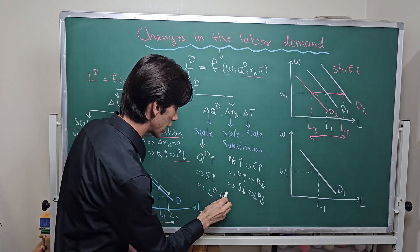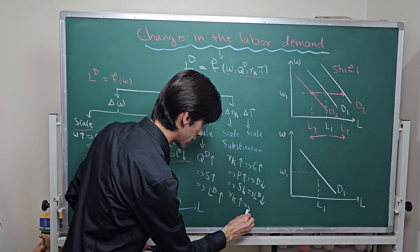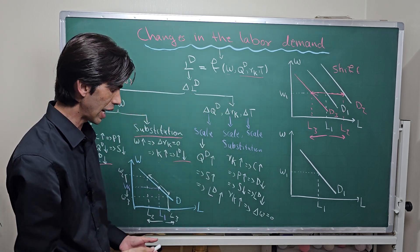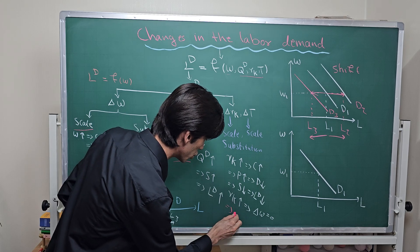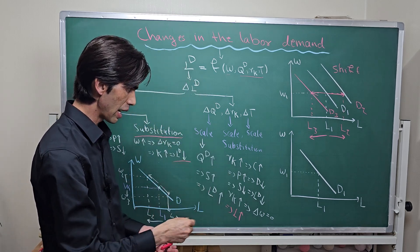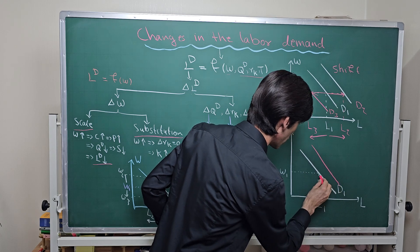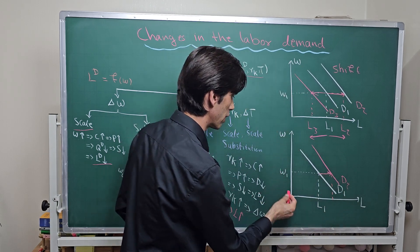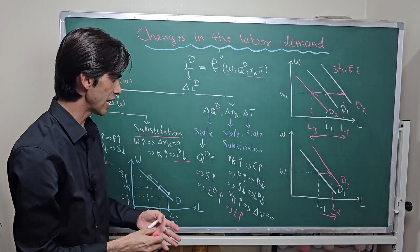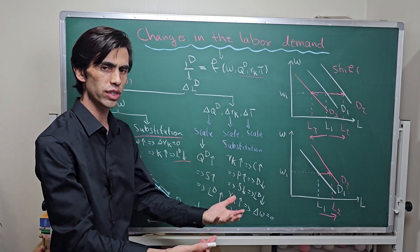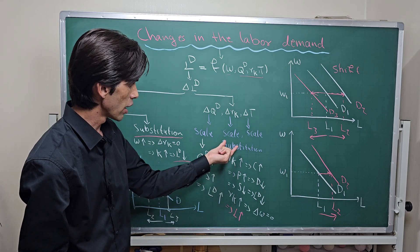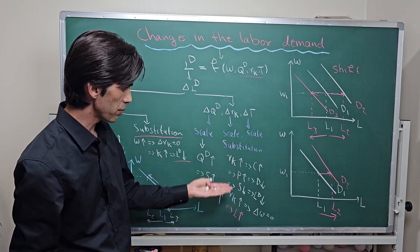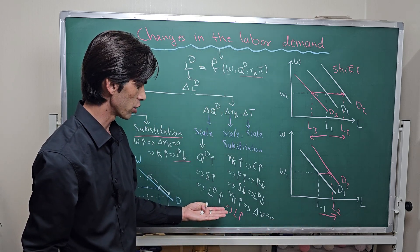But in case of the substitution effect, when the rental price of capital increases — assuming the change in wage is equal to zero — firms try to use more labor instead of more capital. So the labor demand curve shifts to the right from D1 to D2. With the same level of wages, we demand more labor. As you can see, in case of a change in rental price of capital we have two opposing effects. Under the scale effect, labor demand decreases; under the substitution effect, labor demand increases.